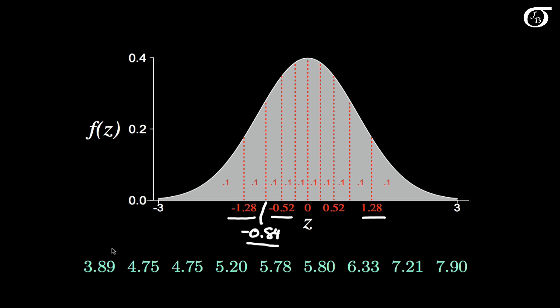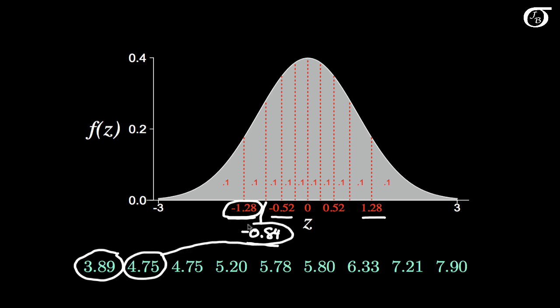What we're going to do is plot the smallest value in our sample of size 9 against what we would expect to get as the smallest value in a sample of size 9 from the standard normal distribution, and the second smallest value against what we'd expect as the second smallest, all the way up to plotting our largest value against what we'd expect for the largest value. If our data is approximately normally distributed, that should result in an approximately straight line.